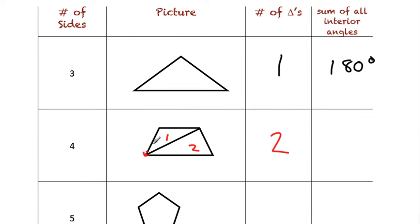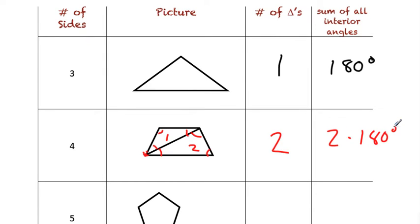If I add up the degrees in all of these plus the degrees in all of these, you've basically got the degrees in the whole quadrilateral. So if I add up the degrees in both triangles, that's two times 180 degrees, which equals 360 degrees. So for a quadrilateral, it's two times 180 because we can draw two triangles.